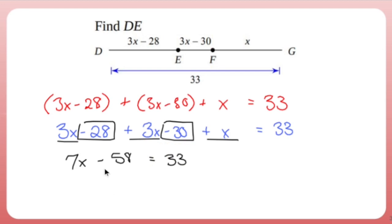Now it's just a regular two-step equation. Let's add 58. 7x is going to equal 91. Last step. Since 7 is attached to x, let's detach it by dividing everything by 7. And 91 divided by 7 is 13.